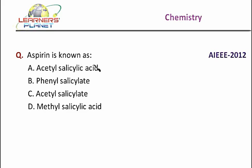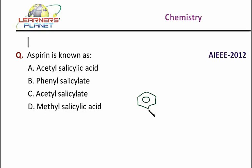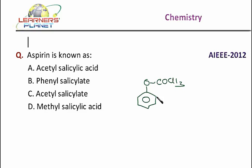Aspirin is known as — for this you should be knowing the structure of Aspirin. What is it? It's a benzene ring bonded to O, which is again bonded to COCH3 and COOH.